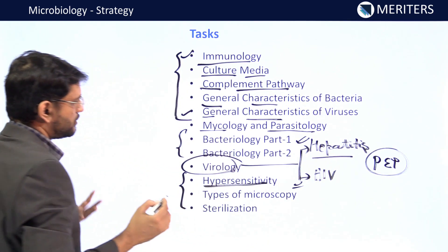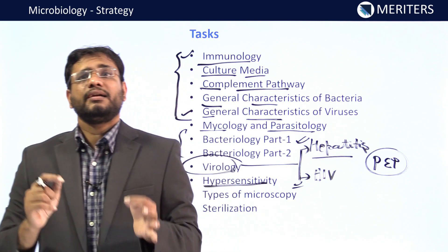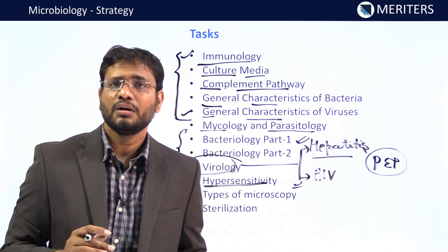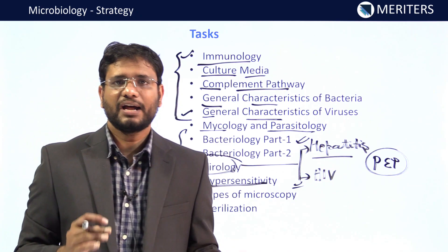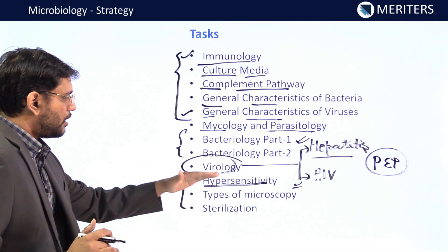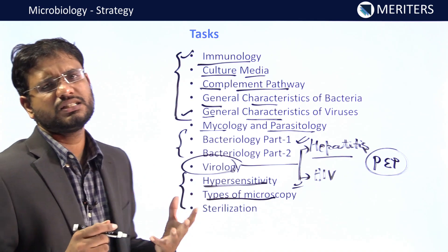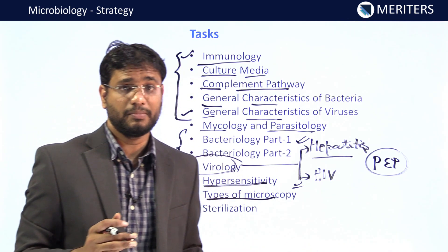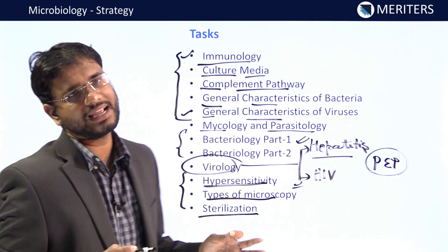Hypersensitivity, part of immunology, has four main types of reactions, and at least one question is asked in NEET. Examiners give an example and ask you to identify the type of hypersensitivity. A fifth type has also been introduced recently. Know the examples of all types — this is comprehensively covered in the bytes. For types of microscopy, questions on electron microscopy and polarization microscopy can be asked.